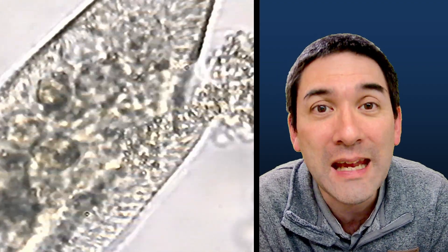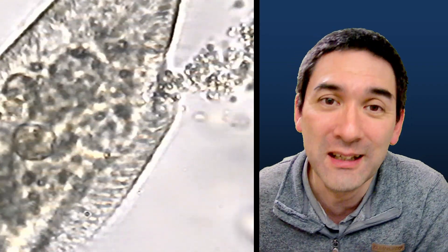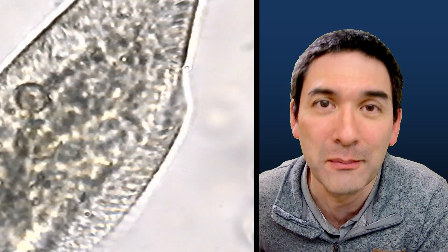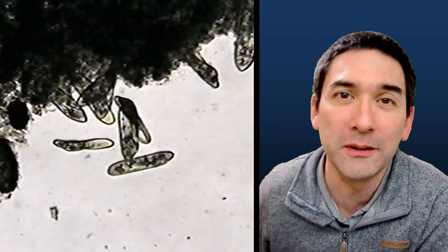There is a little so-called anal pore, also known as a cytoproct, where the paramecium is releasing undigested material. So yeah, as a matter of fact, it's pooping.